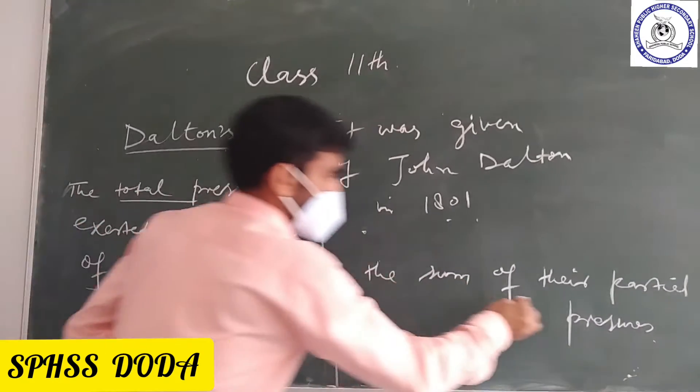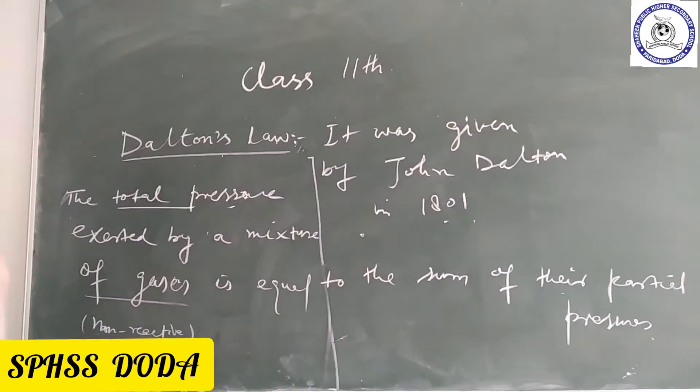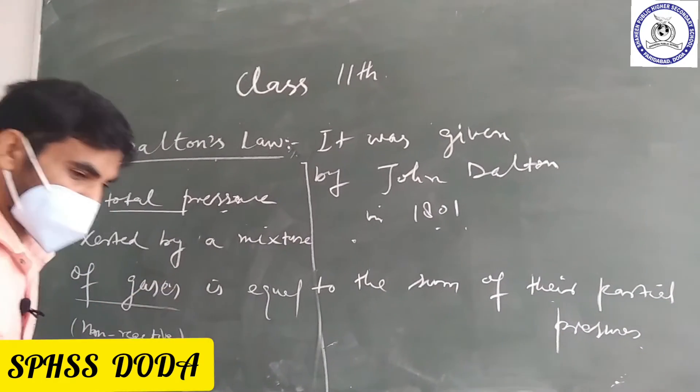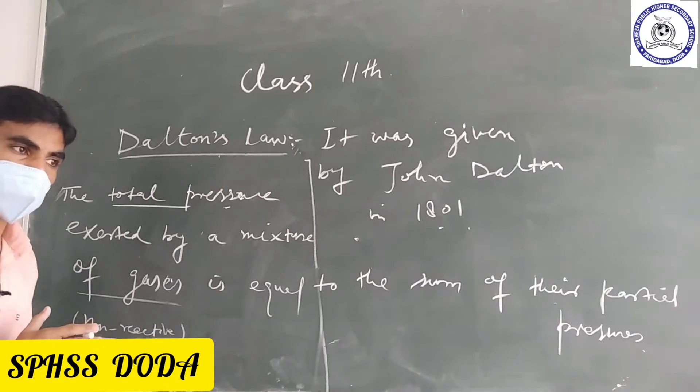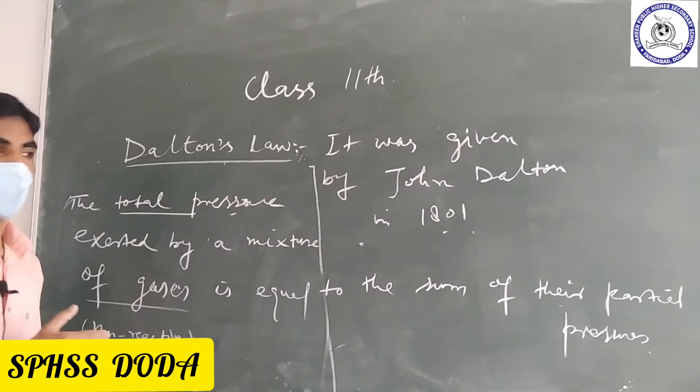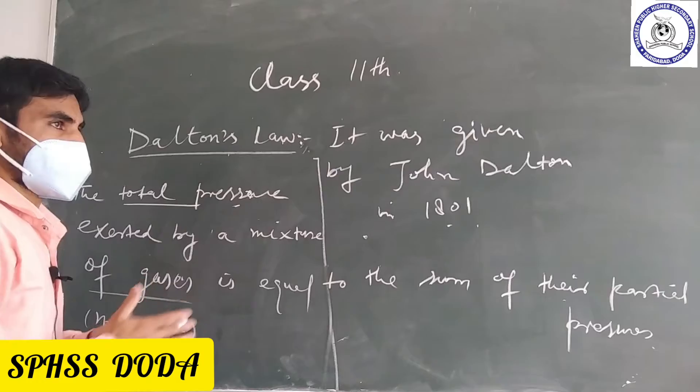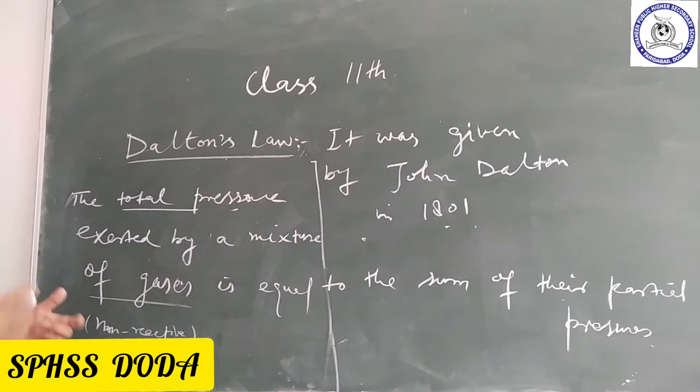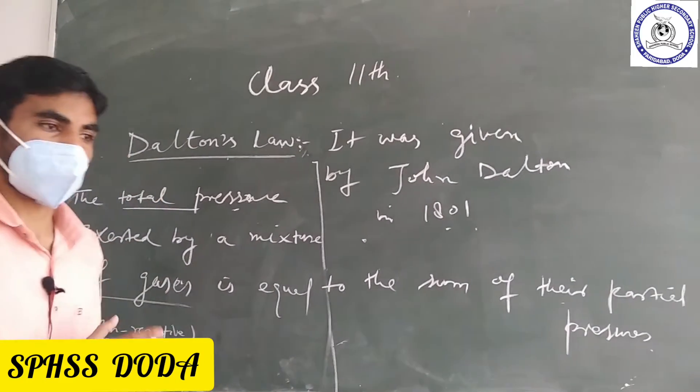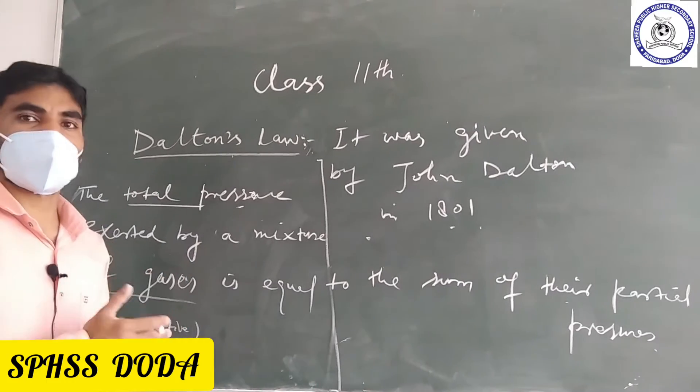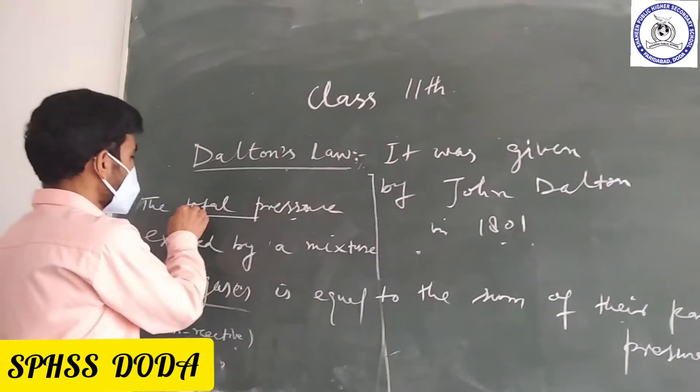Partial pressure means the pressure exerted by gases when they are in a mixture of gases. The pressure exerted by individual gases. You have three or four gases - the pressure is partial pressure. The total pressure is the total pressure.